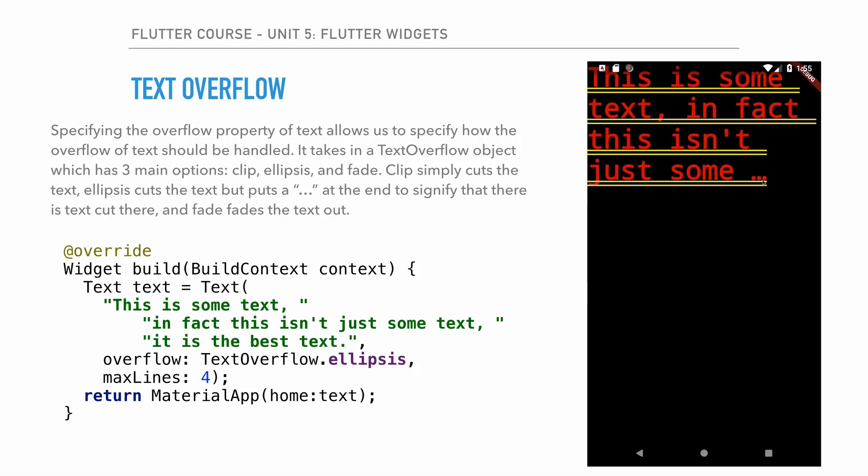Clip is the default — it just removes the overflowing text. Ellipsis adds three dots at the end. Fade is hard to demonstrate in this context because text is either on a line or it's not, so we'll focus on clip and ellipsis here.